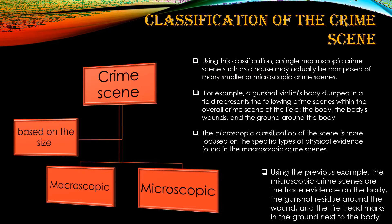The microscopic classification of the scene is more focused on the specific types of physical evidence found in the macroscopic crime scenes. Each macroscopic crime scene has various microscopic classifications within it. Using the previous example, the microscopic crime scenes include the trace evidence on the body, the gunshot residue around the wound, and the tire tread marks in the ground next to the body — all are included in the crime scene.